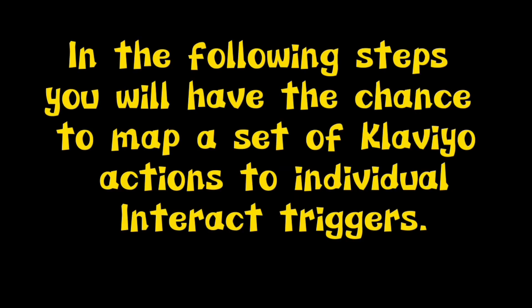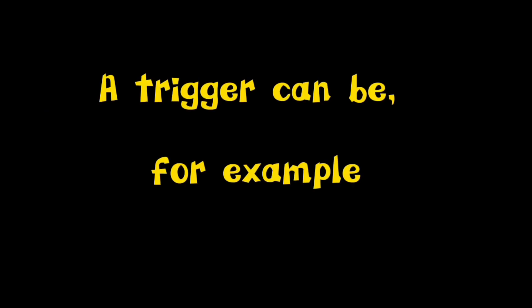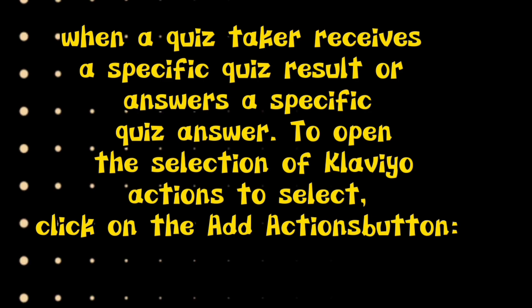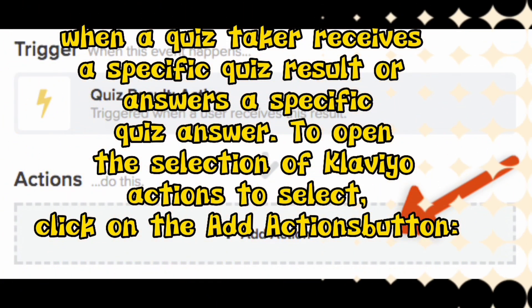Map Interact triggers to Klaviyo actions. Step 1: In the following steps, you will have the chance to map a set of Klaviyo actions to individual Interact triggers. A trigger can be, for example, when a quiz taker receives a specific quiz result or answers a specific quiz answer. To open the selection of Klaviyo actions, click on the Add Actions button.